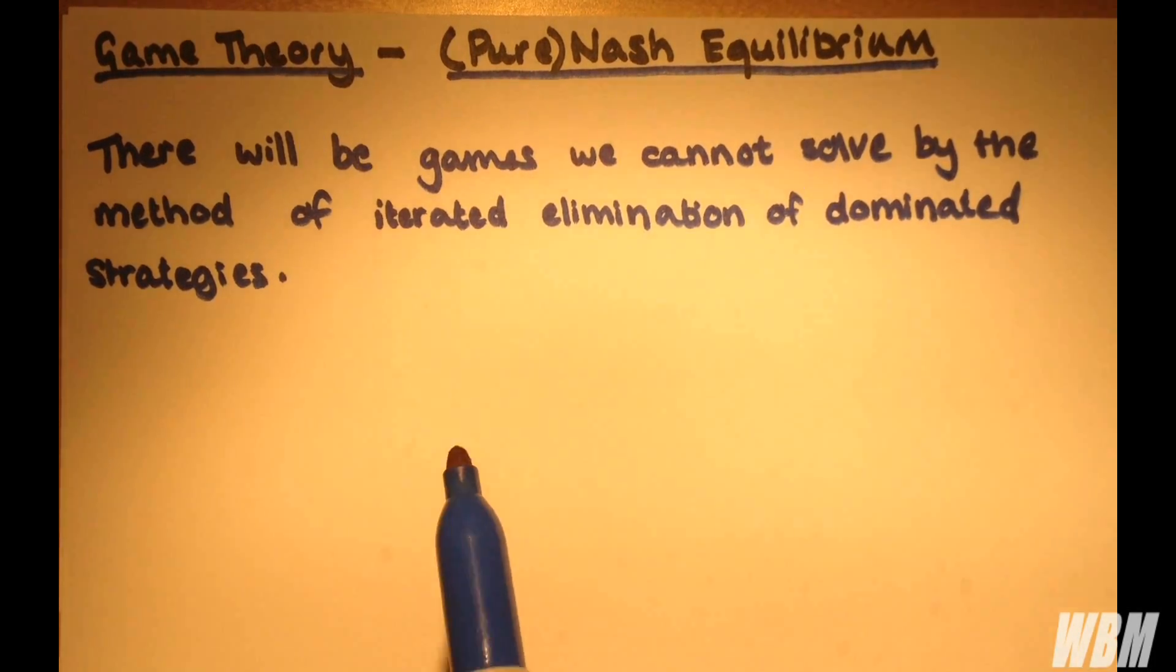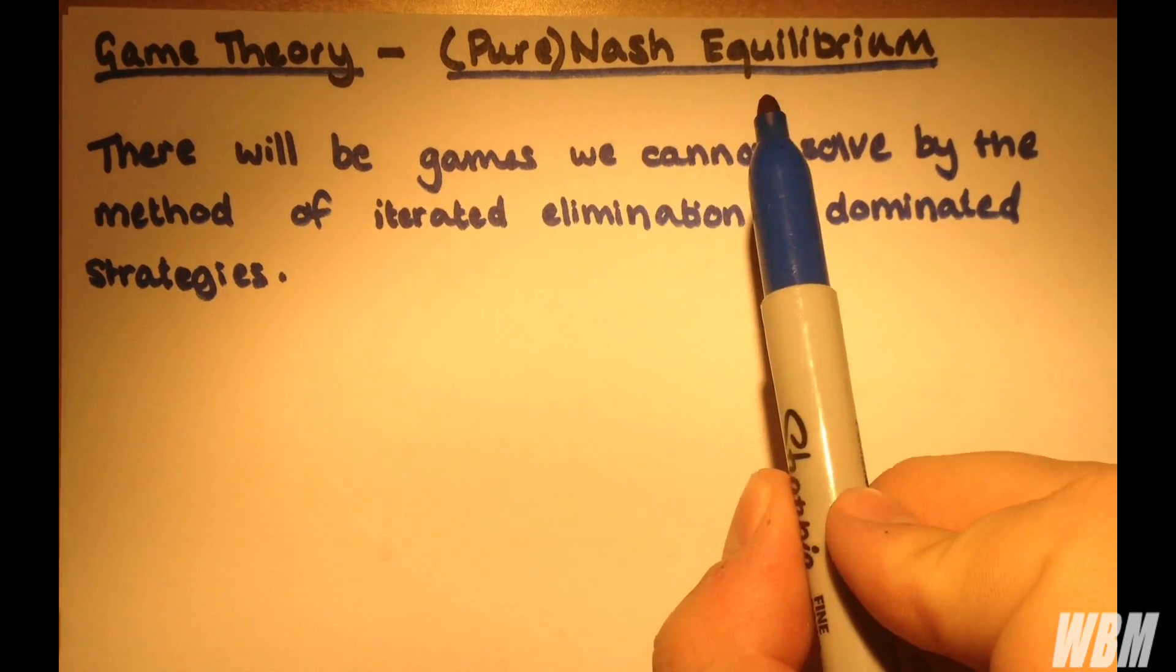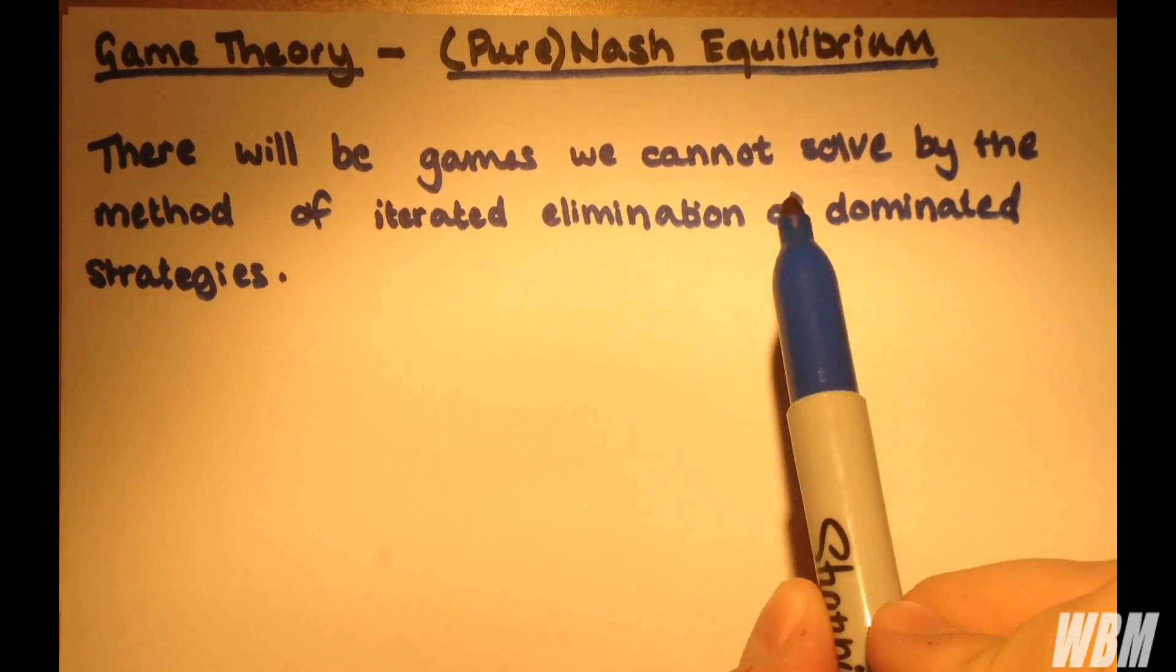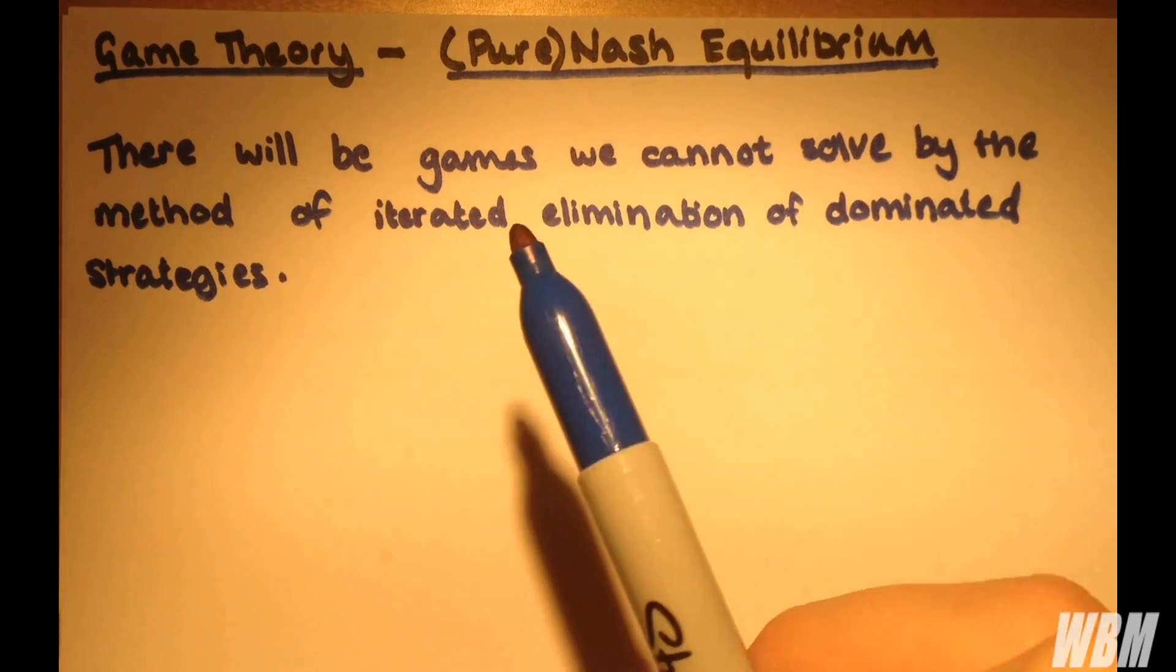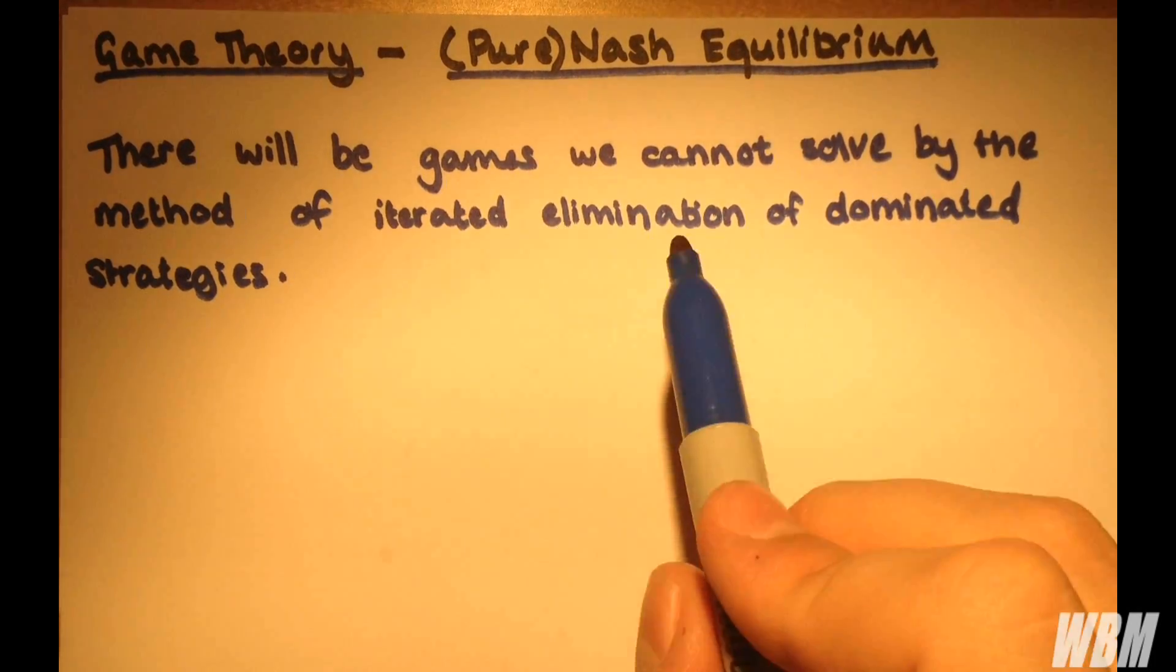Now what happens in these finite games is that we will end up at what's known as a Nash Equilibrium. Possibly there might be two of them, or more. And at these Nash Equilibrium,